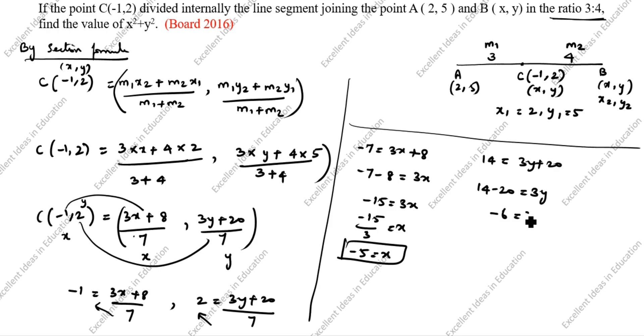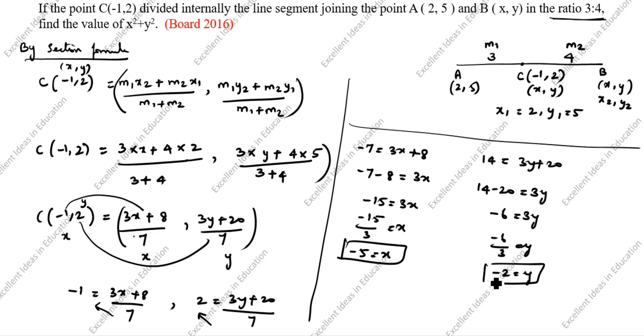For Y: 2 = (3Y + 20) / 7. Cross-multiplying gives 14 = 3Y + 20, so 14 - 20 = 3Y, giving -6 = 3Y, therefore Y = -6/3 = -2.